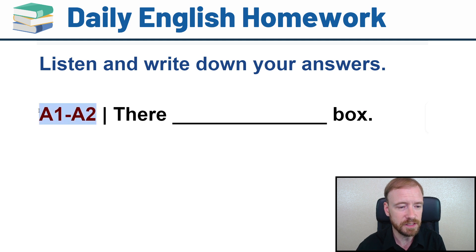The first sentence is A1 to A2 level. This is a very basic level and I'm going to help you. I'm going to give you the first word and the last word. So listen to me. I'm going to say it twice. You just write it down. Here we go. The first time I'm saying it, there's a box. And the second time, there's a box. Okay, write down your answer.